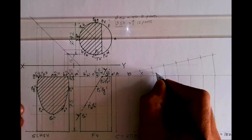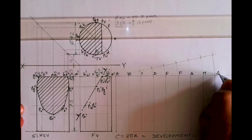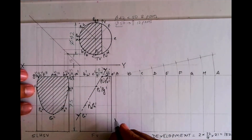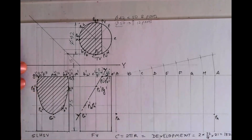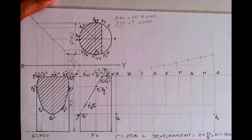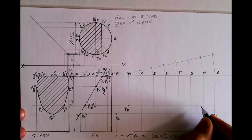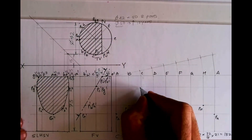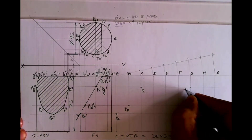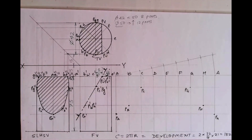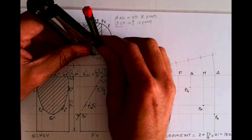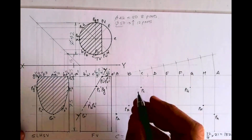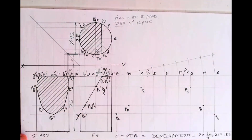We can write a, b, c, d, e, f, g, h, and a on the development. Now I'll plot the points. For pa-dash, draw a horizontal line — wherever it cuts on a, that is point pa. For b and h, extend horizontally — wherever it cuts on b is pb, and that is ph. Same for c and g: wherever it cuts is pc and pg. For pu and pv, you can't project from the front view, so we project from the top view — taking c to pu and g to pv, cutting accordingly to get points pu and pv. Join these with a freehand curve.